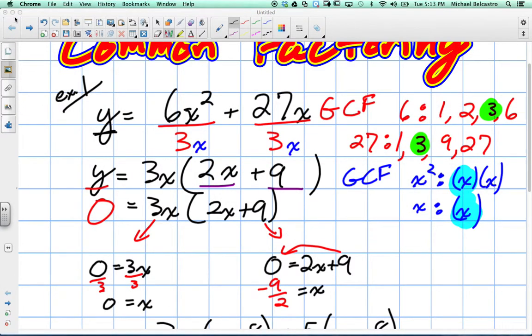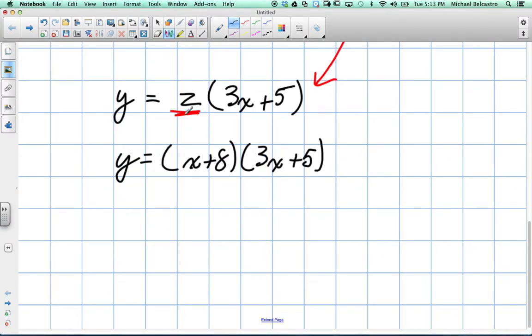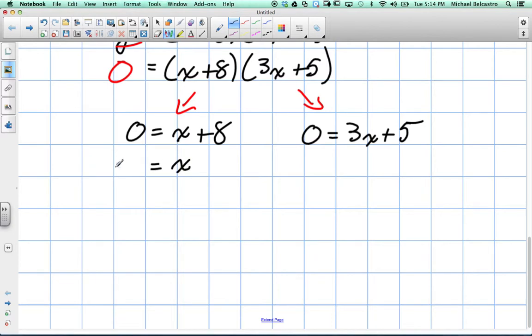And then in our other one, same idea. The whole reason for doing this is to find x-intercepts. So x-intercepts are when what is equal to zero? Y. So we replace it. And now what would we do from here? We break them up. So let's break it up. And zero equals x plus 8 and zero equals 3x plus 5. And what will x equal on the left? Negative 8.